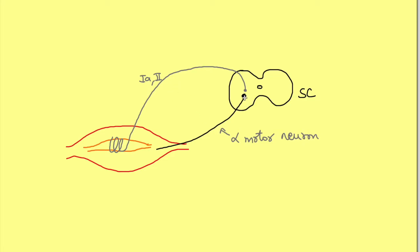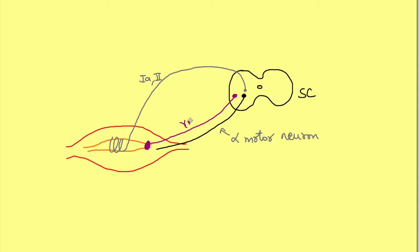Apart from this, there is another neuron known as the gamma motor neuron, which also arises from the spinal cord and supplies the ends of the intrafusal muscle fiber. This intrafusal fiber is sensory, but it has contractile ends that can contract, supplied by the gamma motor neuron.